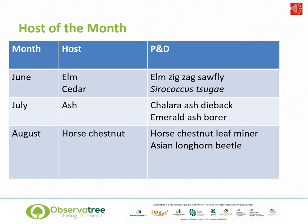In June we'd encourage you to look at elm for elm zigzag sawfly and also look at cedar for Syracoccus sugei. In July we're going to be focusing on ash, looking at ash dieback and emerald ash borer. And finally in August we'd ask you to look at horse chestnut for evidence of horse chestnut leaf miner and Asian longhorn beetle. In the following slides we'll provide a brief overview of each of these pests and pathogens, but again I would remind you to go and look for detail on the Observatory website.